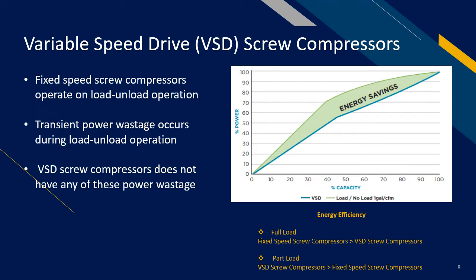Now let's talk about variable speed drive, or VSD, screw compressors. The energy efficiency at full load of VSD compressors is slightly poorer compared to fixed speed compressors, solely due to the conversion loss. For VSD compressors, in order to produce variable speed control, it converts the inlet AC to DC and then converts it back to AC based on the required frequency. This conversion process is what we call conversion loss, and that is the main reason why the energy efficiency at full load for VSD compressors is slightly poorer compared to fixed speed compressors.